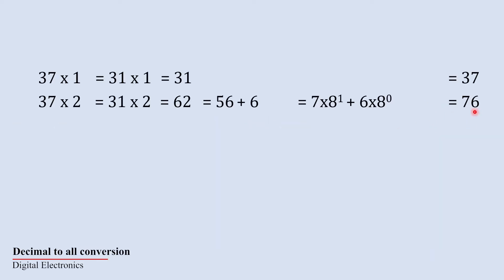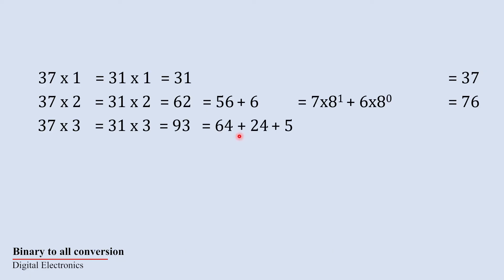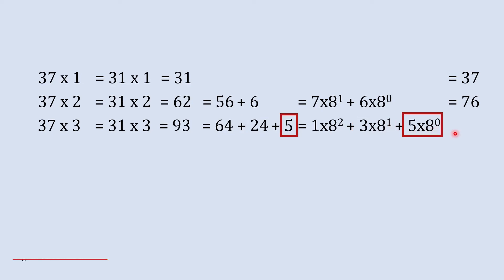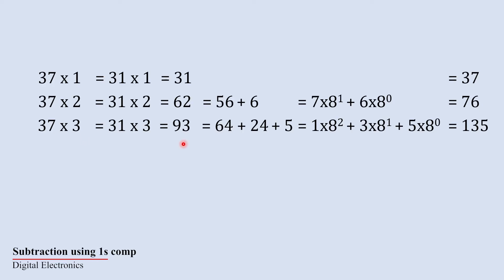For 37 threes: 31 × 3 = 93. We write 93 as 64 + 24 + 5 = (1 × 8²) + (3 × 8¹) + (5 × 8⁰), giving us octal 135. So 135 is the octal equivalent of decimal 93. Here I am quickly doing octal-to-decimal and decimal-to-octal conversion.